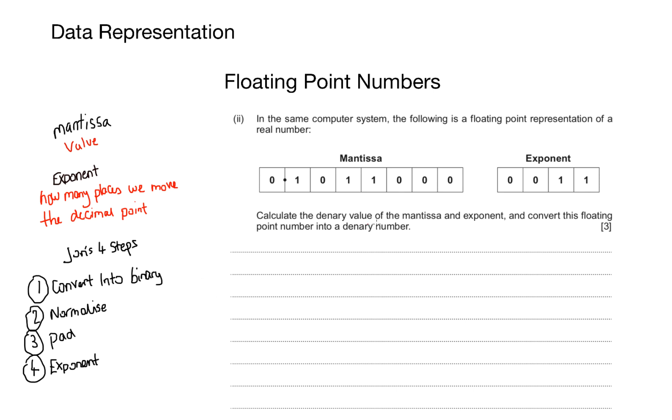Exactly the same process for this question. Calculate the denary number of the value of the mantissa and exponent, and convert the floating point number into a denary number. So the first thing I do is I apply my numbers on the top to work out the denary values of the mantissa, and I'll add the number 0.5, added to 0.125 and 0.0625, and that gives me a total of 0.6875, or if you did it in fractions, that would be 11 sixteenths. So the value of the mantissa has been found. The value of the exponent is fairly straightforward. That is three. So that's already two marks in the bag.